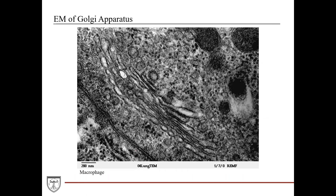This is an electron micrograph of a macrophage, which is an immune cell. Here's your Golgi apparatus — it has a very distinct pancake-stacked appearance. You see these long tube-like structures continuously stacked on each other. This is the appearance and pattern you're going to be looking for on electron microscopy.